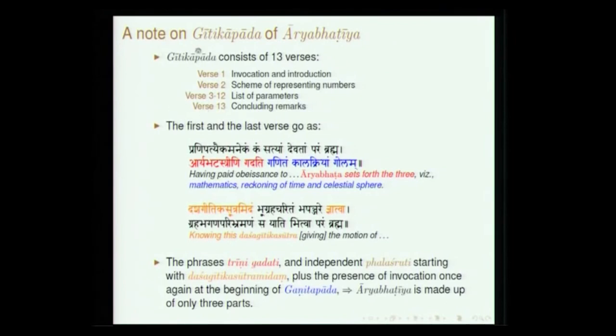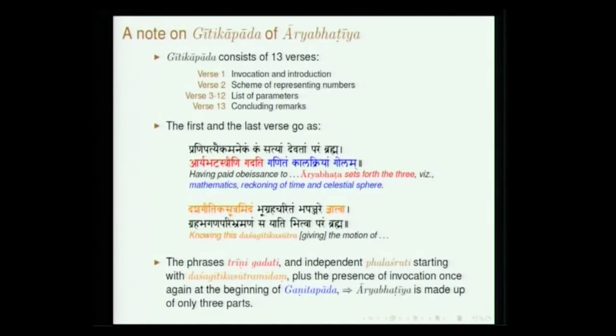The first section, Githika Pada, consists of 13 verses as I was mentioning. Verse 1 is the invocatory verse: Pranipatyaika manekam kam satyam devatam parambhramha, Aryabhata striini gadati ganitam kalakriyam golam. We find a very clear statement where Aryabhata himself says Aryabhataha gadati — gadati means 'states.' What does he state? Ganitam kalakriyam golam. This Githika Pada essentially presents numbers and certain parameters, and is considered to be somewhat outside the main text in some sense.